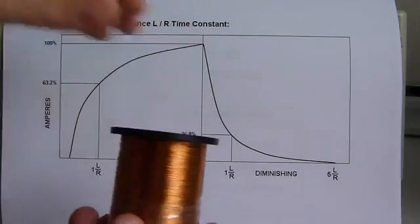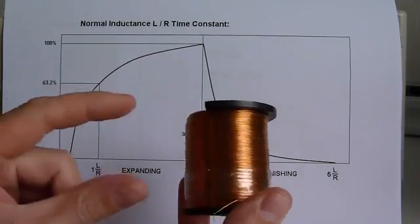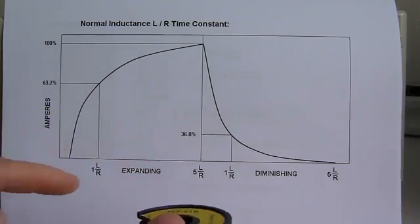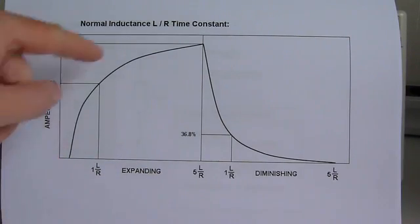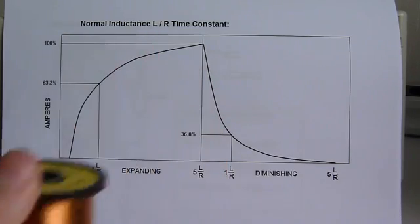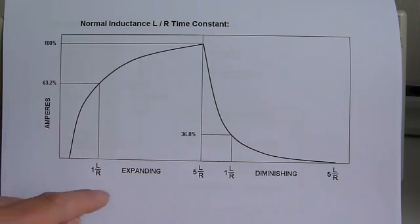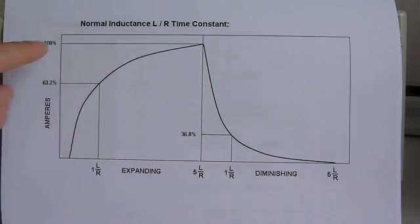In a normal inductor, when you provide a DC voltage to it, the inductor will respond by creating a magnetic field, and the creation of the magnetic field follows this graph. At 1 L-over-R times, the magnetic field has expanded to 63.2% of its maximum field strength, and at 5 L-over-R times it has reached its maximum at 100%.